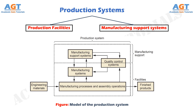Both categories include people. People make these systems work. In general, direct labor workers are responsible for operating the manufacturing equipment, and professional staff workers are responsible for manufacturing support.